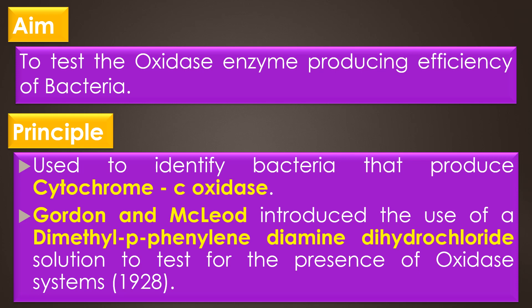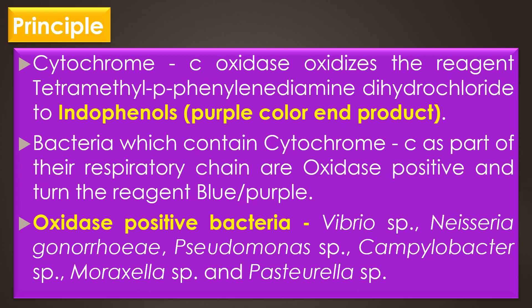In 1928, Gordon and McLeod introduced the use of dimethyl p-phenylenediamine dihydrochloride solution to test the presence of the oxidase system. When the enzyme is present, the cytochrome c oxidase oxidizes the reagent tetramethyl p-phenylenediamine dihydrochloride to indophenols, and the formation of indophenols is observed in the form of a purple color end product.